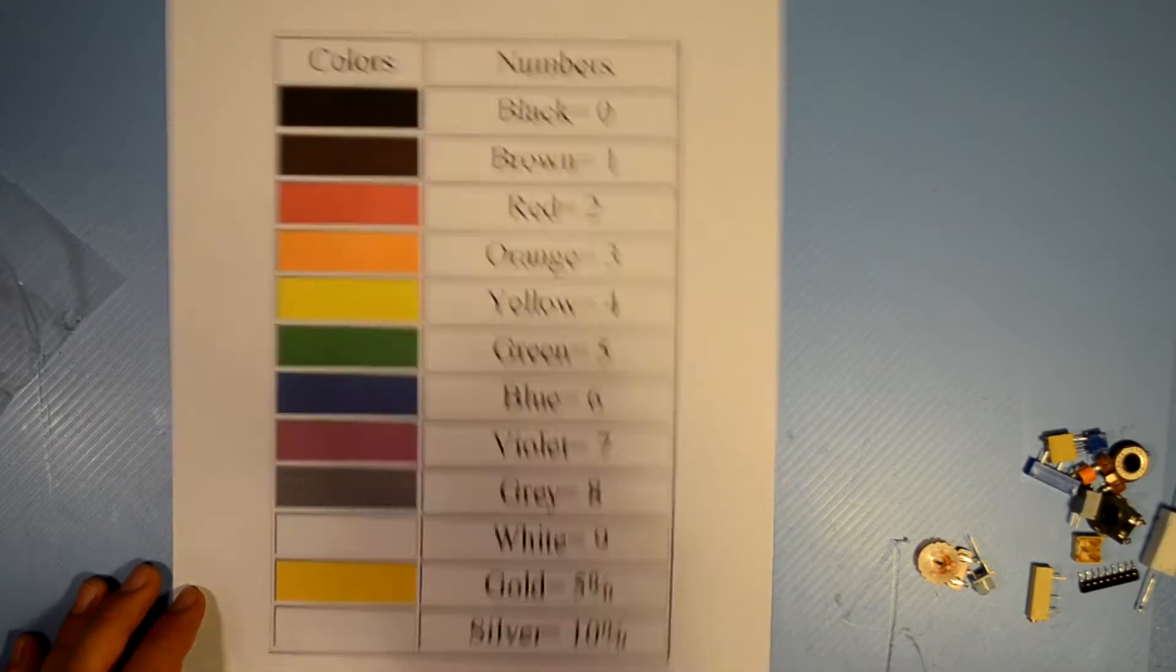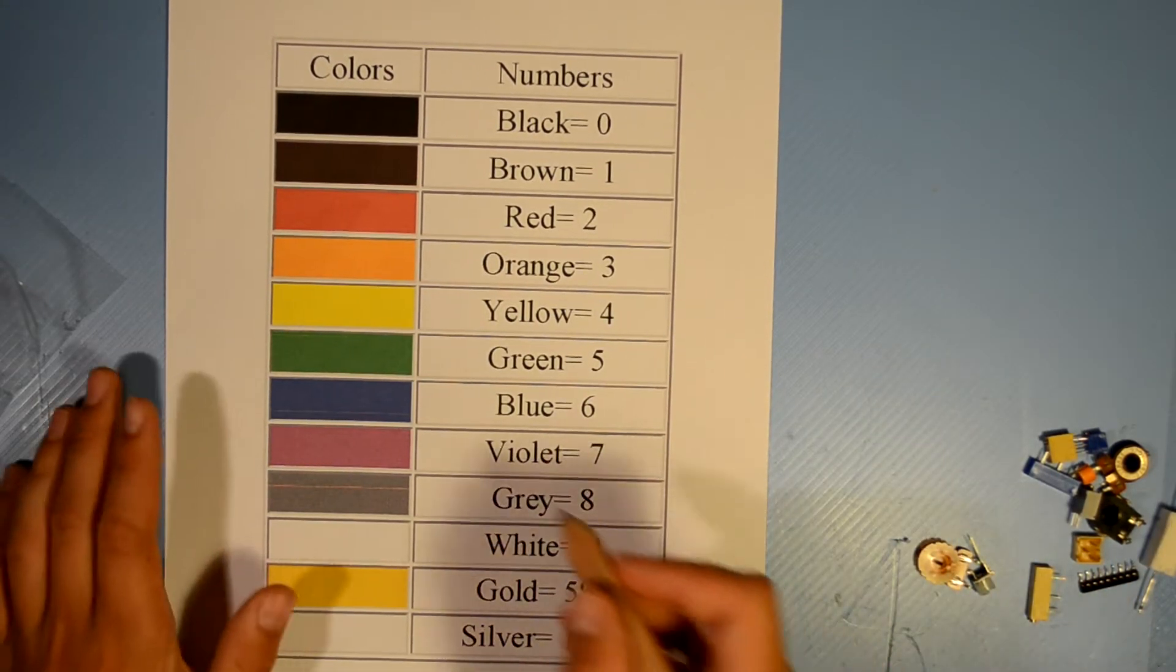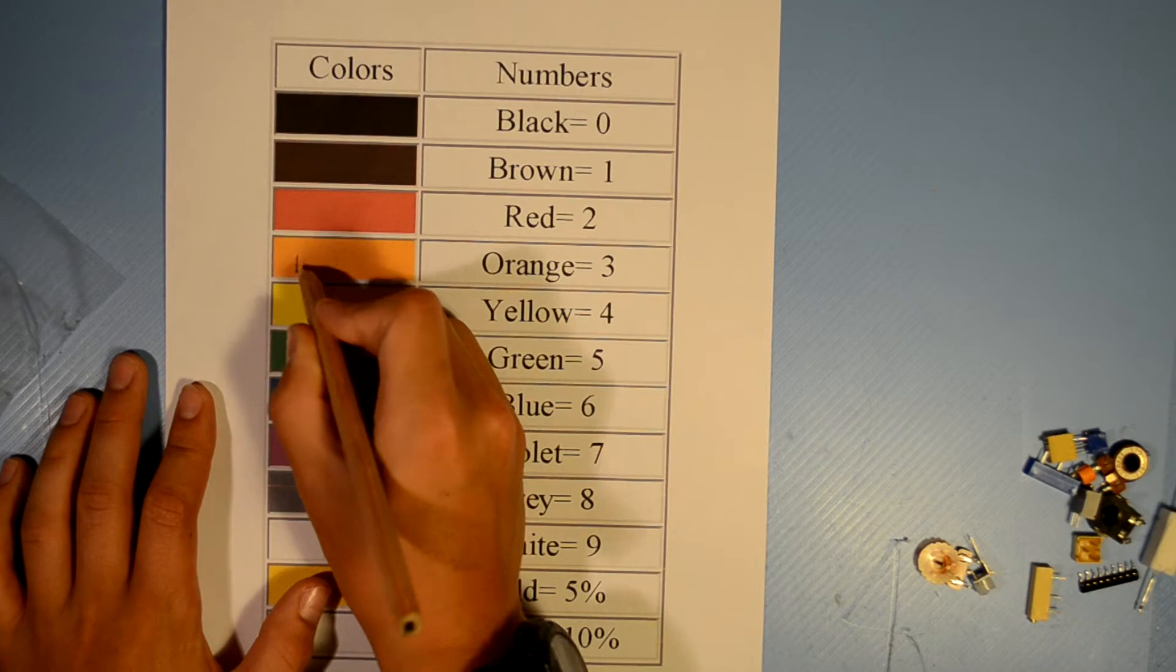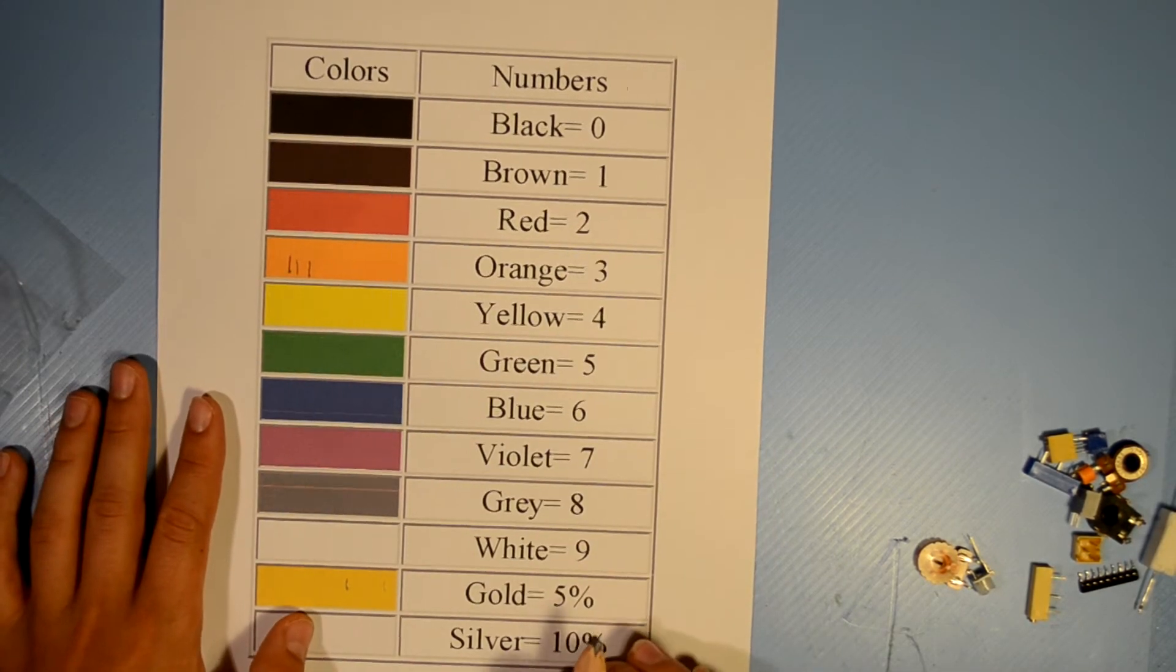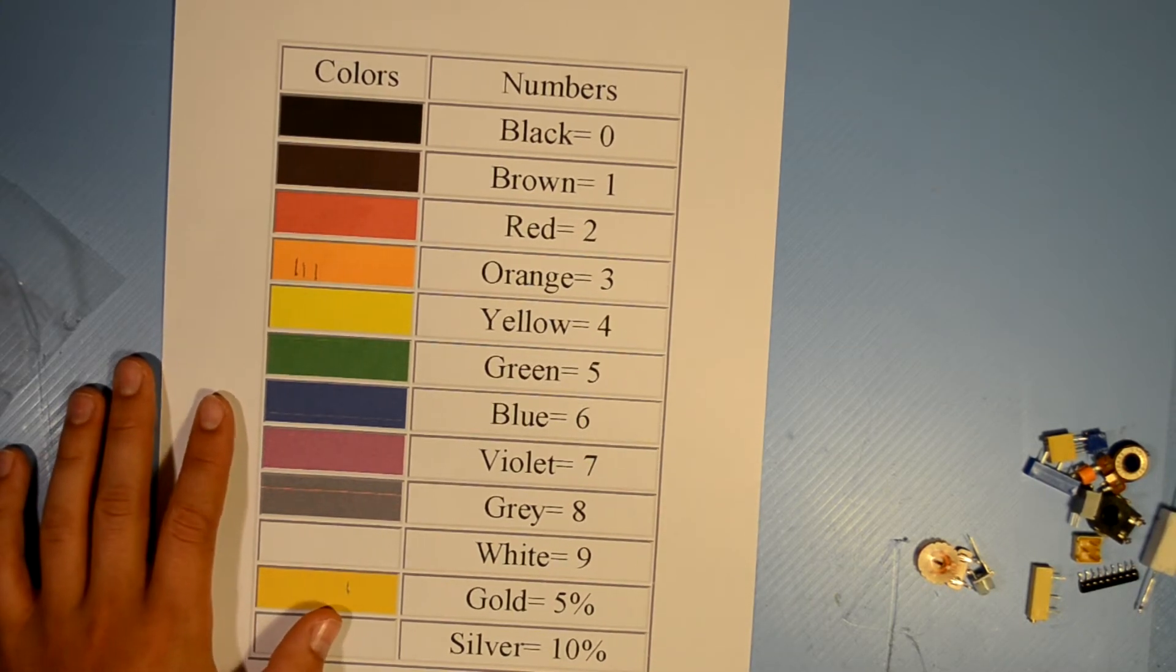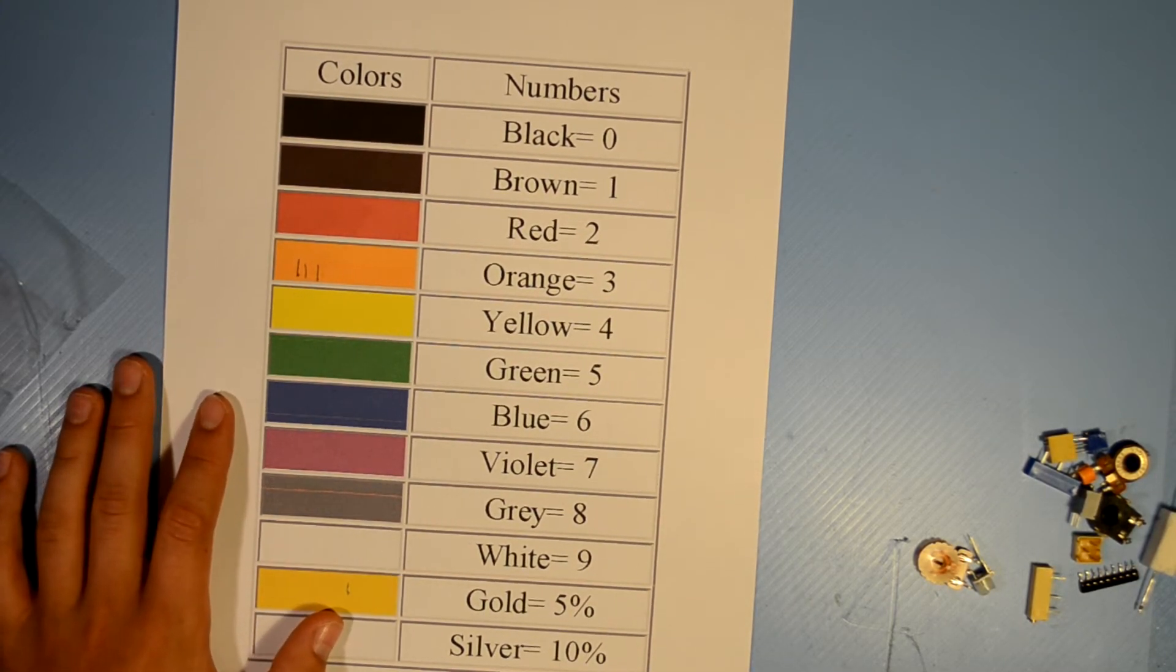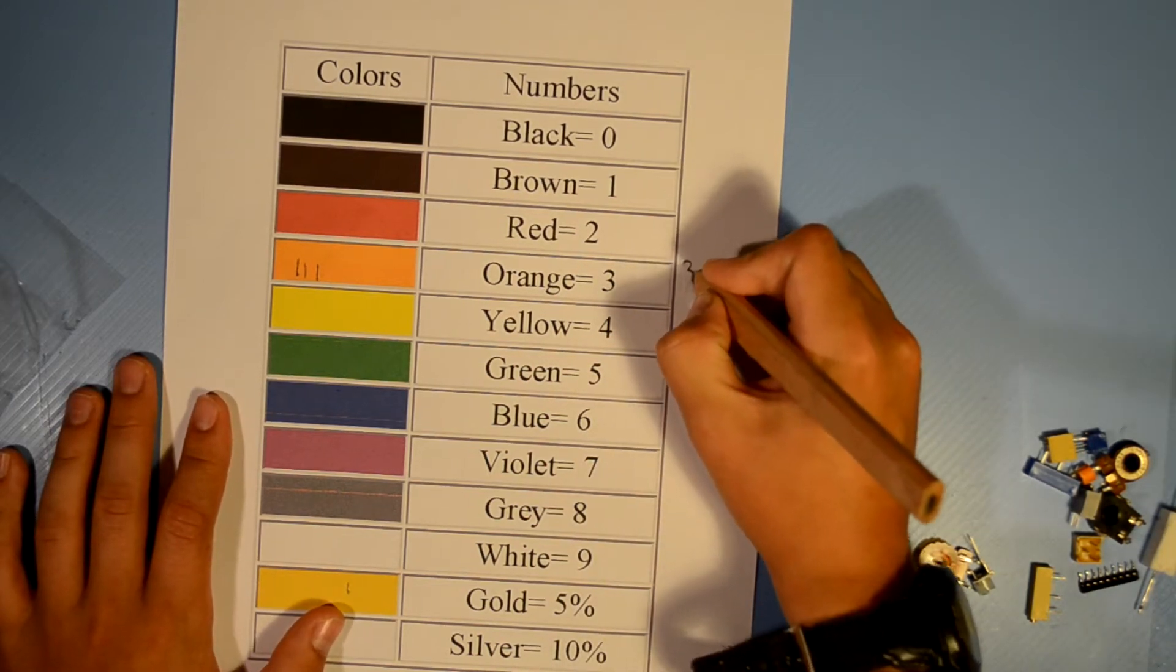All you need to do is look at your resistor. Mine, the color code is orange, orange, orange, gold. So, what you're going to do is you're going to, for your two colors, write down the number that they represent. So, in my case, 3, 3.